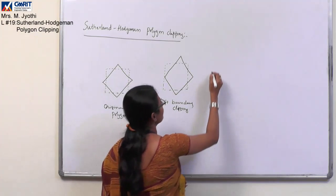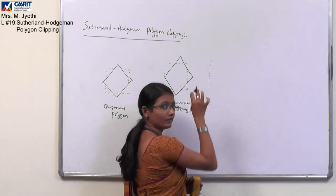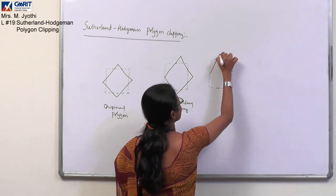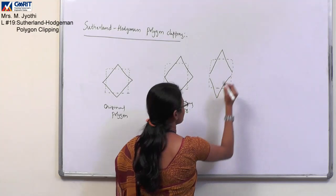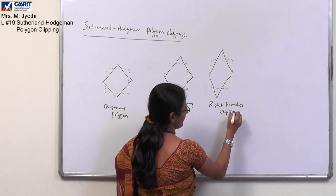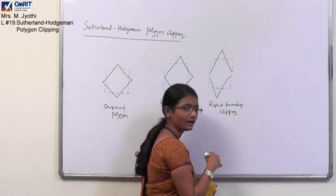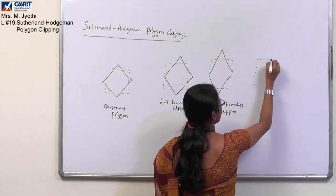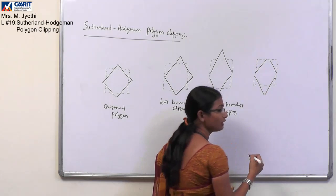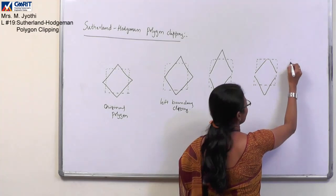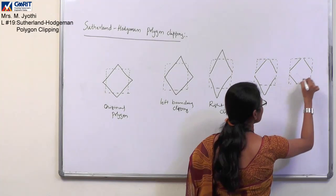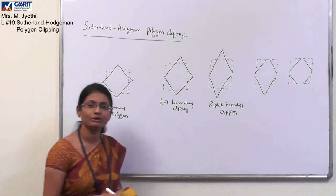For the right side, you process using the new vertices and your image may look like this after right boundary clipping. Then you clip on the upper side — the upper boundary of your clipping window — and your image may look like this. Finally, you clip the bottom boundary, and the clipping window result will look like this. This will be your final polygon after performing the clipping operation.